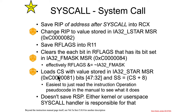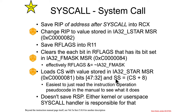Furthermore, it's going to load the CS value for kernel space with a value from IA32_STAR bits 47 to 32. And then SS is going to be CS plus 8. So if these bits were zero, SS would be 8; if these bits were 8, SS would be 16. Regardless of the value, it would still always be interpreted as a segment selector, as we've seen in the past.